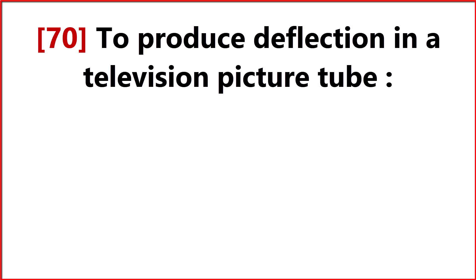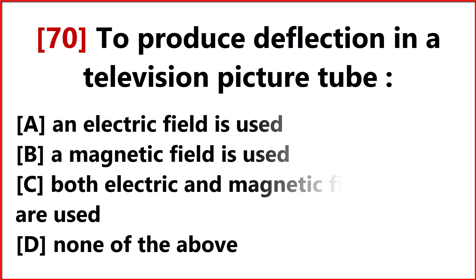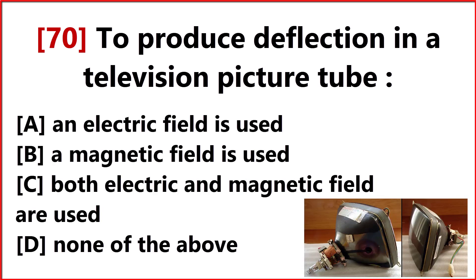To produce deflection in a television picture tube? Option B. A magnetic field is used.